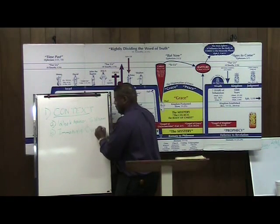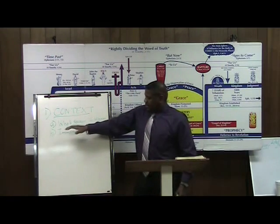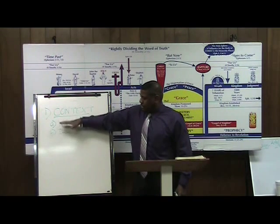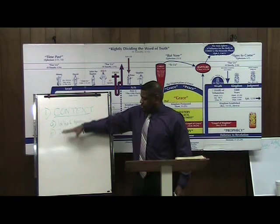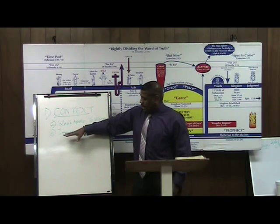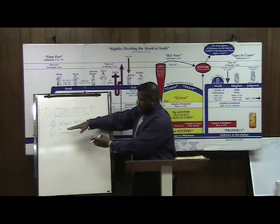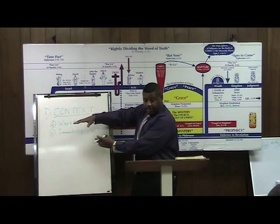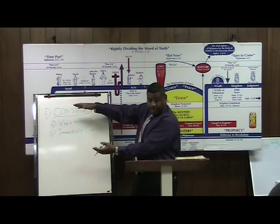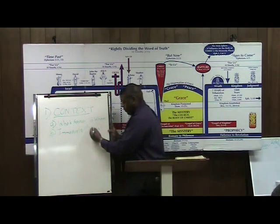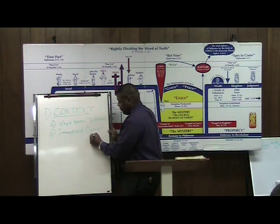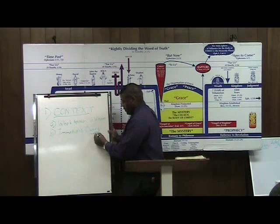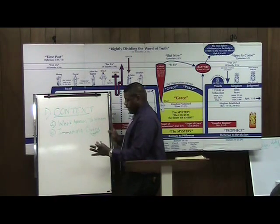Simply put, immediate context is — if you're looking at a verse, what are the verses directly surrounding that verse? The overall context could be the chapter or the book. Different Bible writers in different chapters deal with different things.